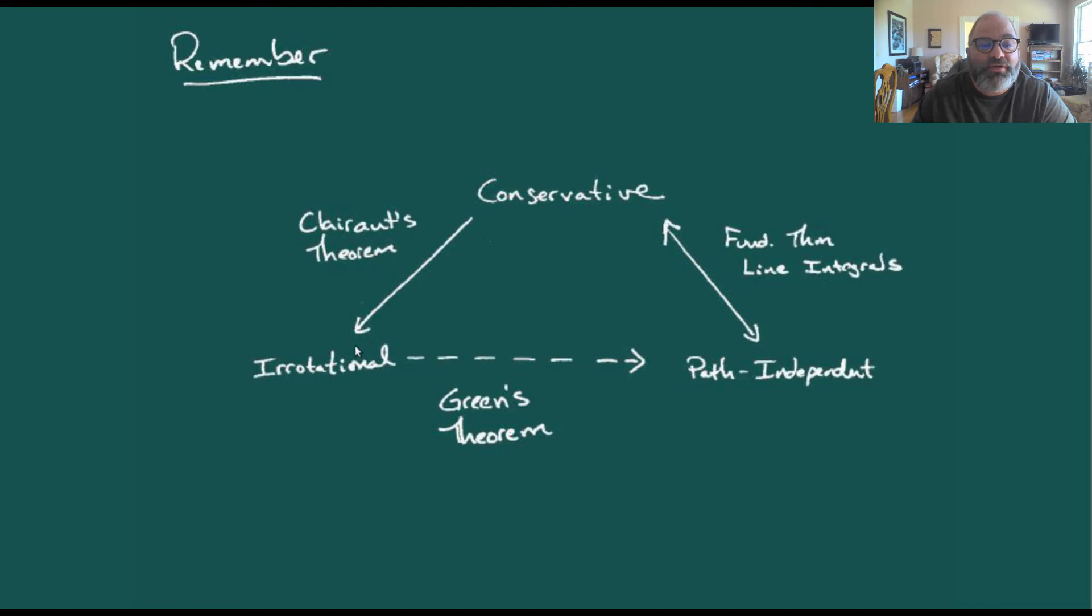Then Clairot's theorem told us that these irrotational vector fields, where the curl of that vector field is zero, form almost a triangle through here.